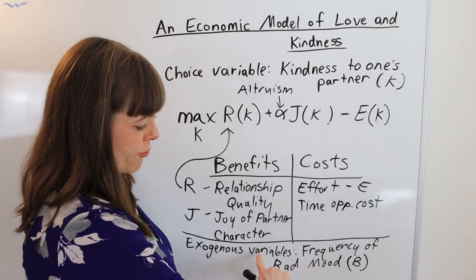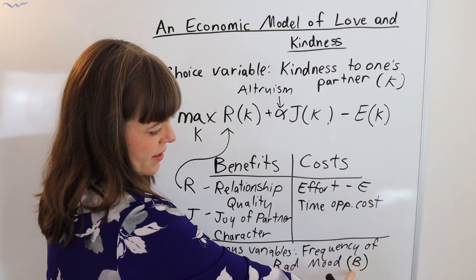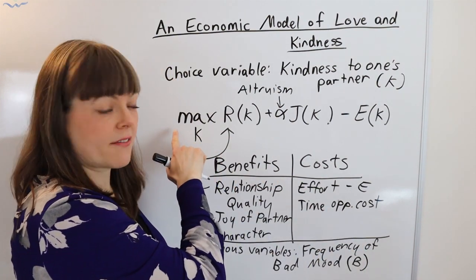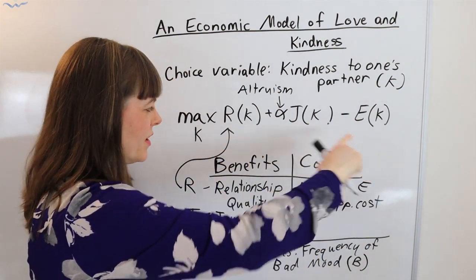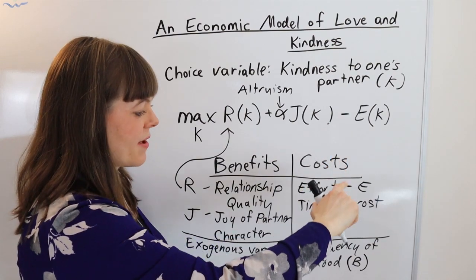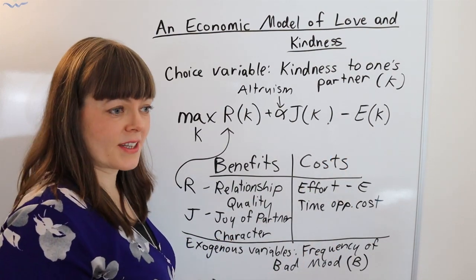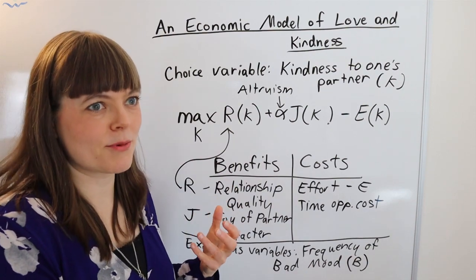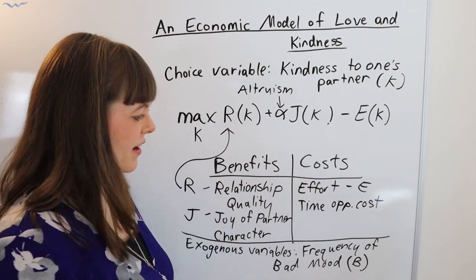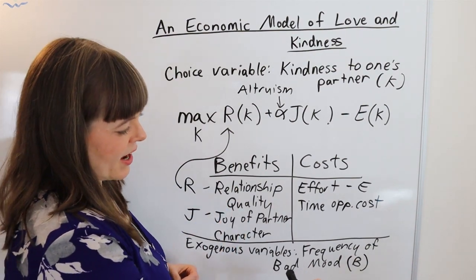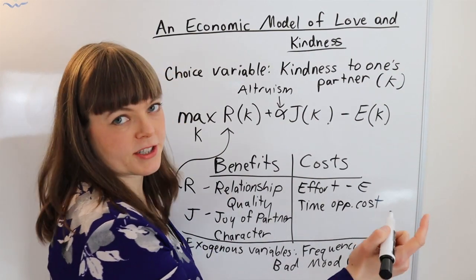And I'm going to call frequency of your bad moods B. And of course that's frequency of the bad moods of you, which is the person whose model this is. But you also might want frequency of your partner's bad mood because when they're in a bad mood it's much more difficult to be kind to them. So I'm going to have B1 and B2.